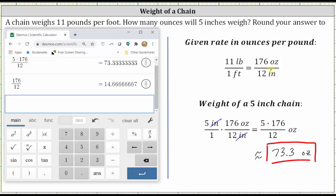we would have approximately 14.7 ounces per inch. So if we use the rounded unit rate to determine the weight of the five inch chain, we would have five inches times the unit rate of approximately 14.7 ounces per inch. And notice how this gives us a slightly different answer of 73.5 ounces. So it is close, but there's more of an error in the answer of 73.5 ounces, which is why we use the exact rate of 176 ounces per 12 inches to determine the weight of the five inch chain.